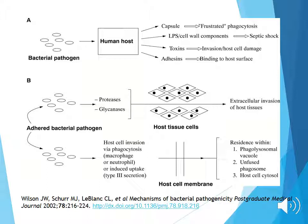This is the first figure from the review paper we read looking at mechanisms of bacteriopathogenicity. In panel A we have a bacterial pathogen introduced into the host, and there are a number of different factors that allow it to be successful as a pathogen — one being the capsule, which can lead to frustrated phagocytosis. This figure summarizes some of the bacteriopathogenicity factors that influence microbe-host interactions.